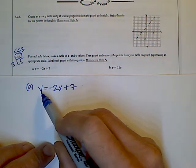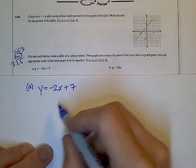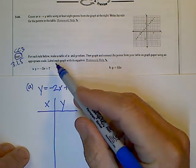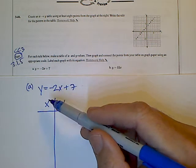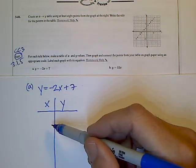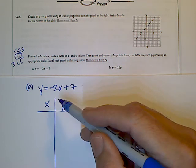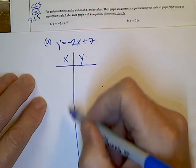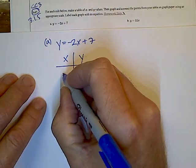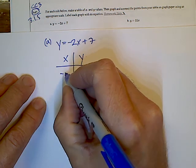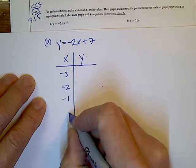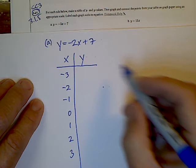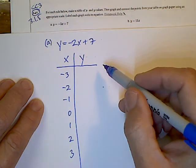So the rule is y is equal to negative 2x plus 7. So my x and y table. And the values that I'm going to choose, I'm going to start getting used to using pretty much the same values each time just to see what this graph looks like. And it's always nice to have a range in the negatives and the positives for the x. So I'm going to use negative 3, negative 2, negative 1, 0, and then 1, 2, 3. So 7 values is a good amount to be able to see what this graph is going to look like.